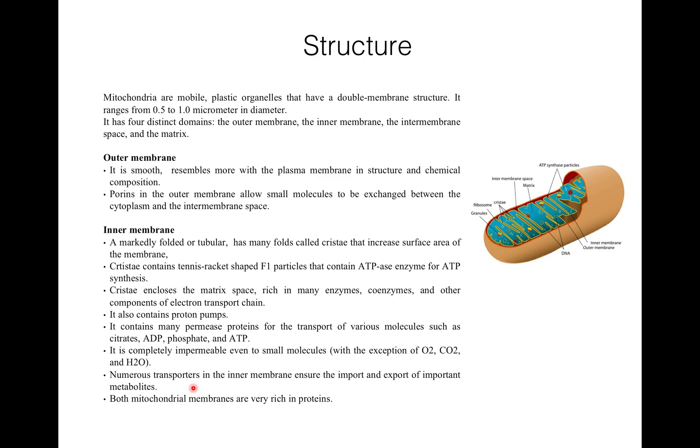Both mitochondrial membranes, that is outer membrane and inner membrane, are very rich in protein. Each membrane is 60 to 75 angstrom thick and they are separated by a space which is called intermembrane space, which is about 80 to 100 angstrom. Phospholipid in inner membrane is mainly diphosphatidyl glycerol and inner membrane has more protein.